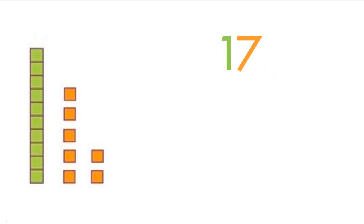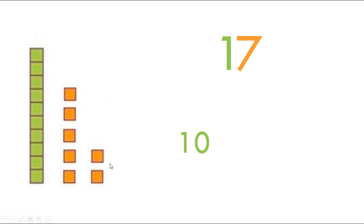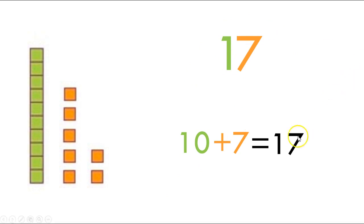Our next step is we need to write a number sentence. Our first number sentence that goes along with this number here is how many tens did we have? We had one, so ten. We have ten plus how many ones did we have? We had seven. So ten plus seven equals — what is our number here? Seventeen. So ten plus seven equals seventeen. One ten plus seven ones equals seventeen.